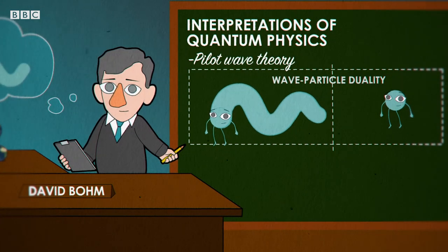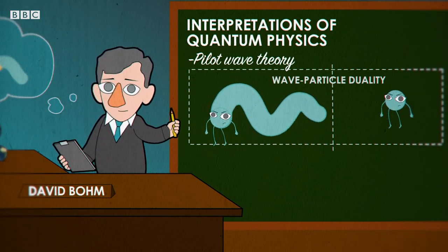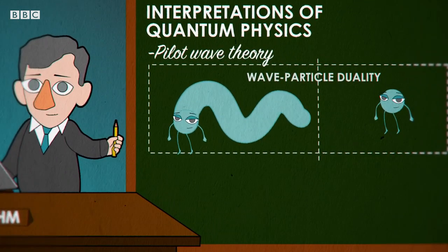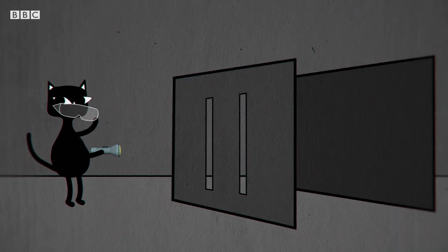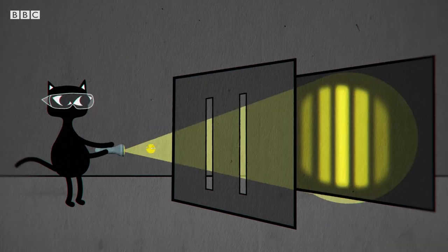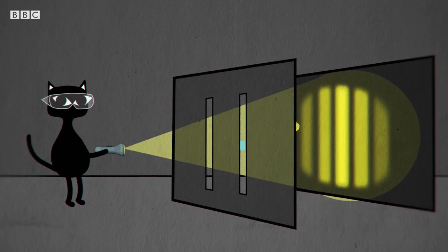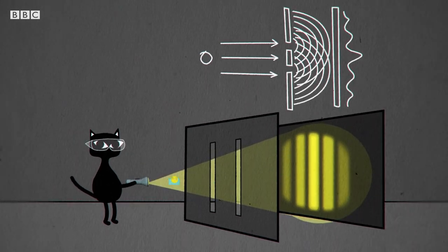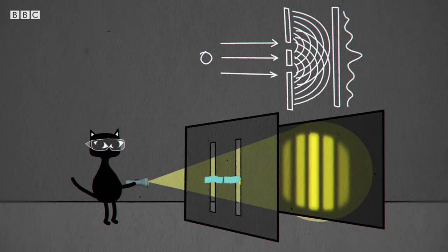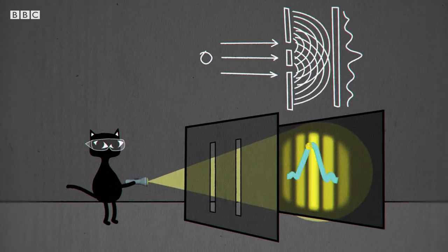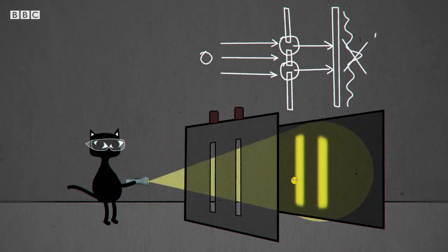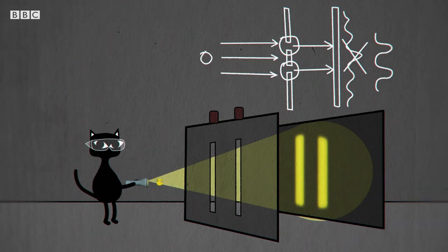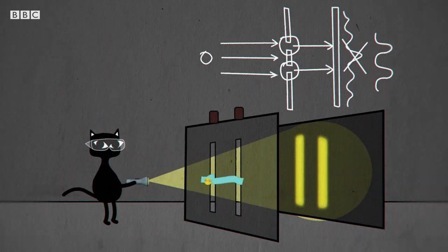The pilot wave interpretation says the question of particle or wave is answered with both — you have particles that are guided by waves. In the double slit experiment, the wave goes through both slits, the particle goes through one slit, and then the wave interferes with itself, affecting the motion of the particle and building up the interference pattern. If you put detectors on each slit, that affects the waves and destroys the interference pattern. There's nothing super mysterious about it — it's just a mechanical interaction.